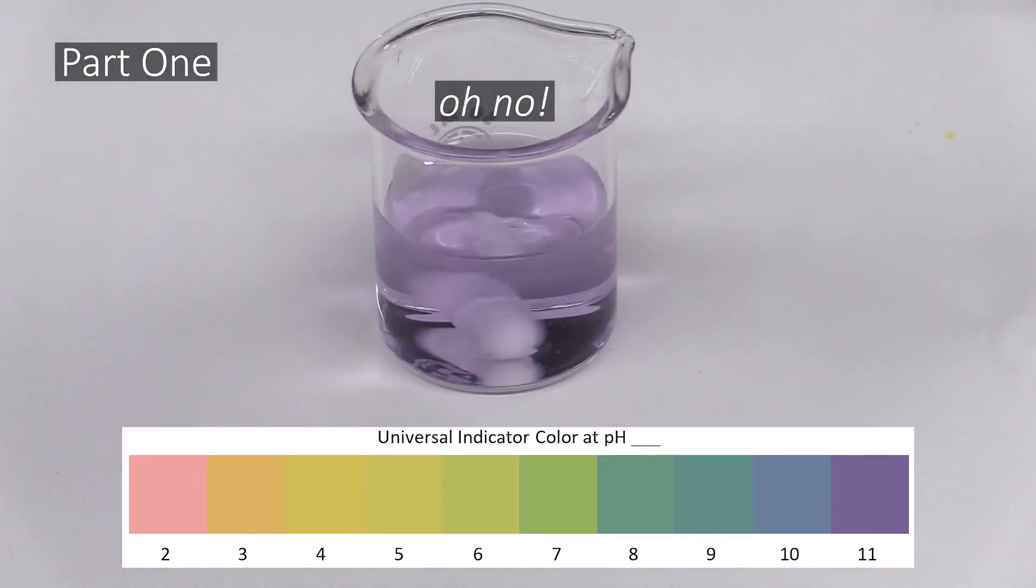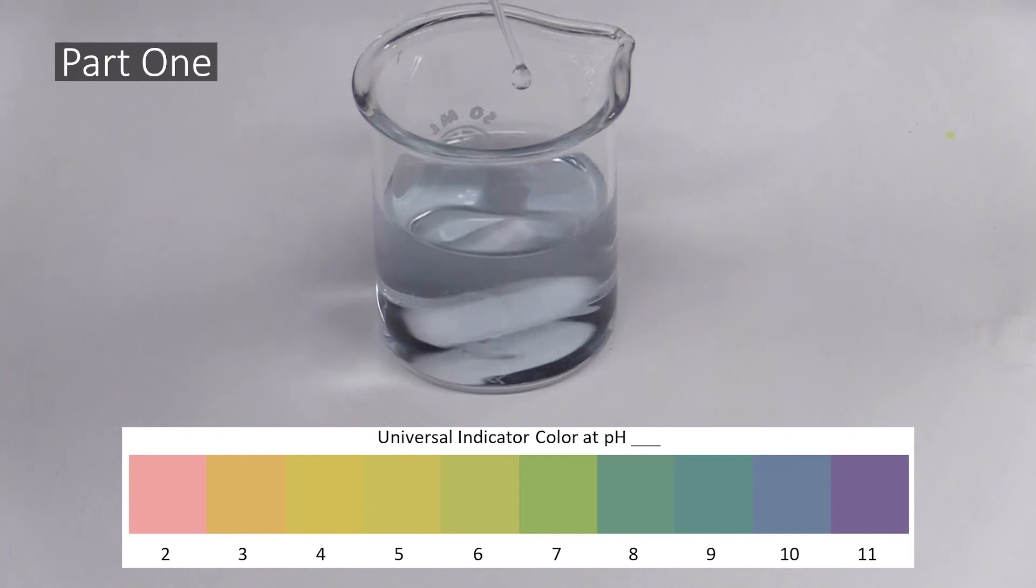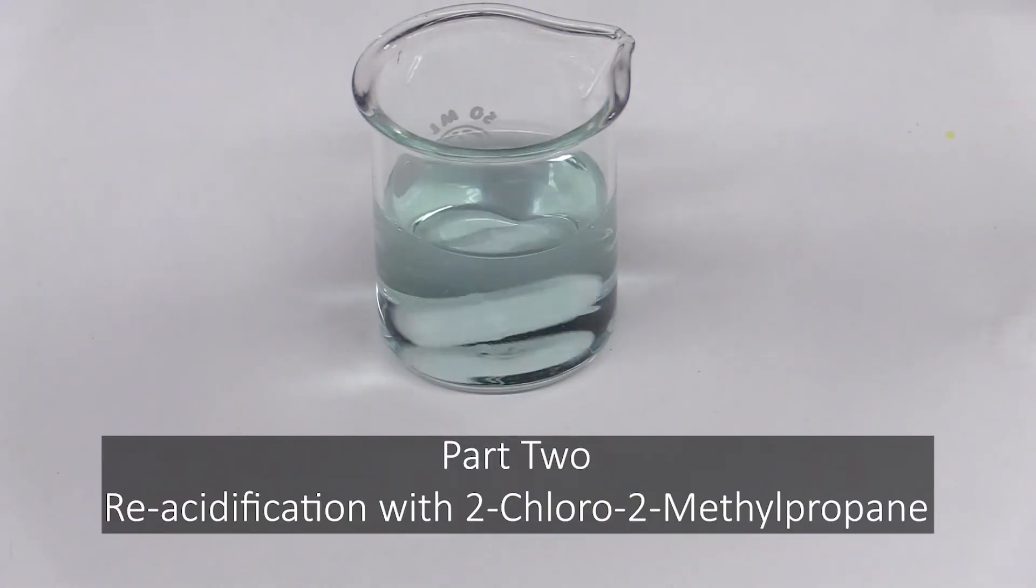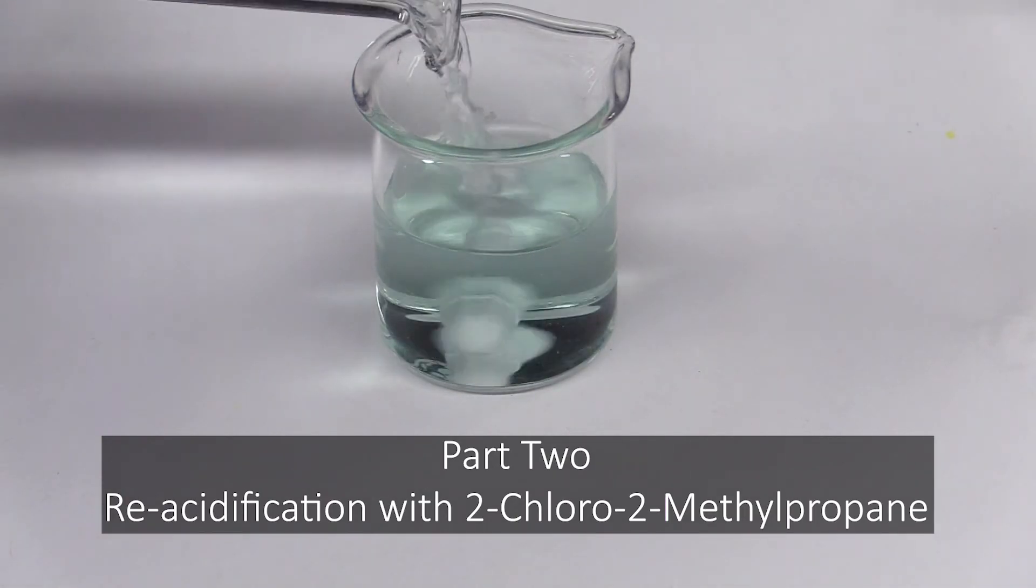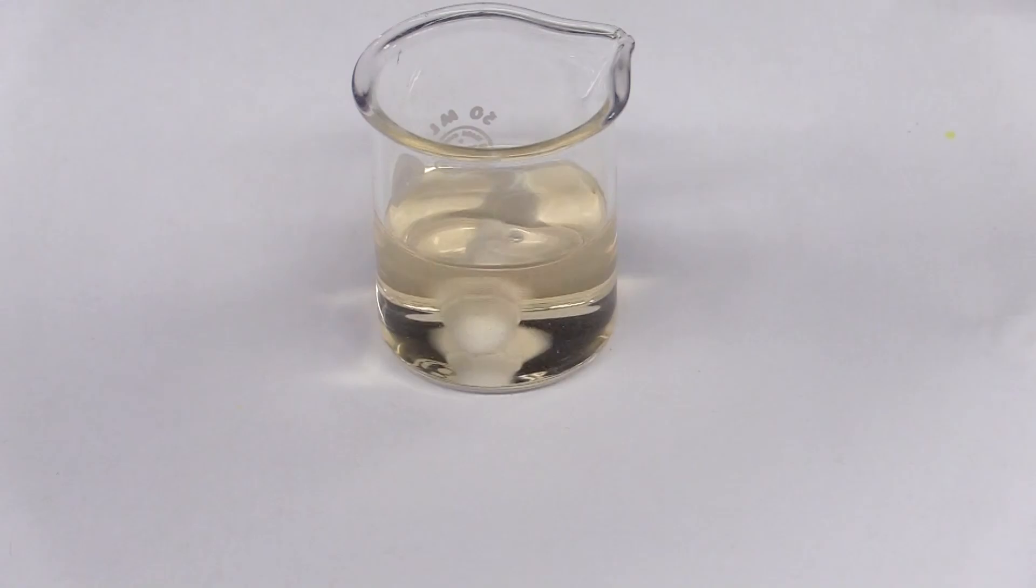If you overshoot, don't panic, just add a few drops of acid to bring the pH down again. In Magic Color Station Part 2, you will take the solution you made in the first part and use a special reaction involving 2-chloro-2-methylpropane to re-acidify it. All you have to do to start this reaction is add some prepared 2-chloro-2-methylpropane. You can track this reaction the same way you brought the acid solution to pH 9, that is, by monitoring the solution's color.